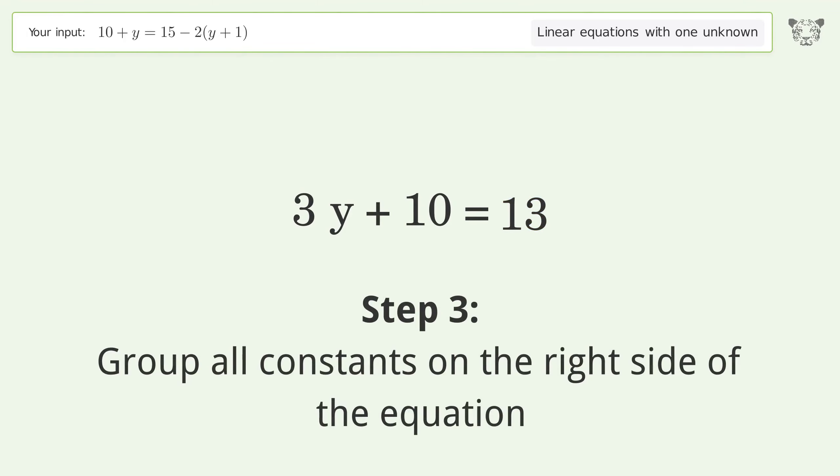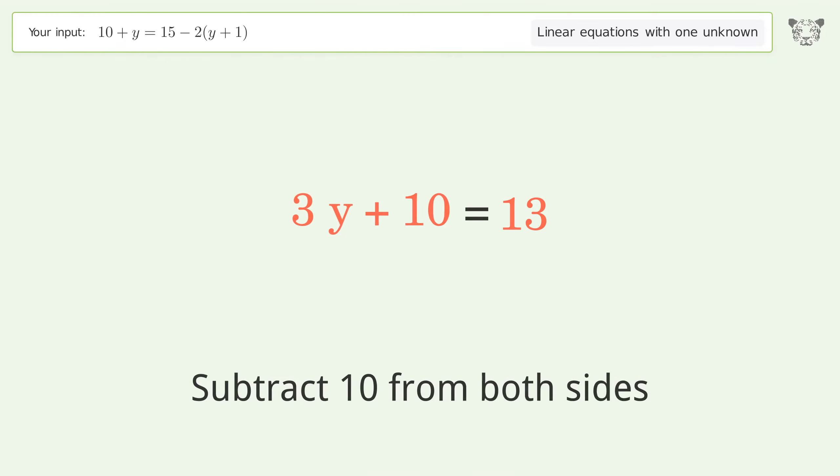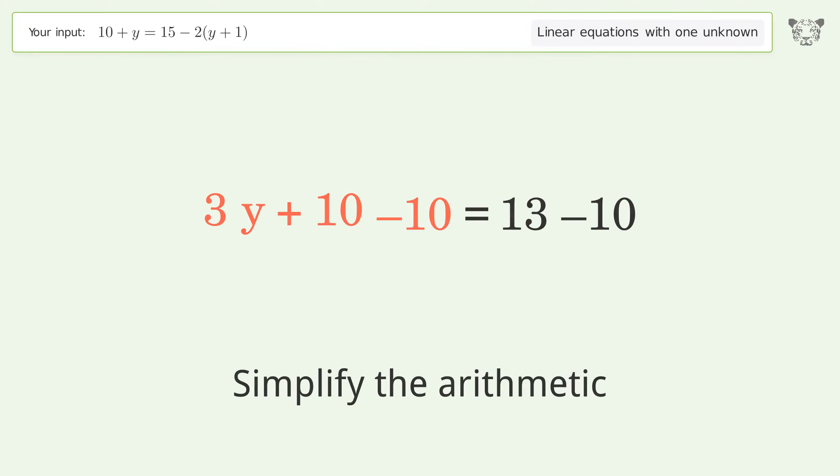Group all constants on the right side of the equation. Subtract 10 from both sides. Simplify the arithmetic.